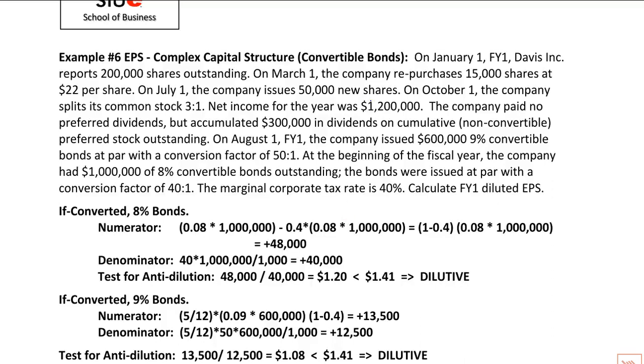Alright, we're back with EPS and now we're into diluted earnings per share. Our first example is going to be with convertible bonds, and we're going to use this method that's also used for convertible preferred stock called the if-converted method.